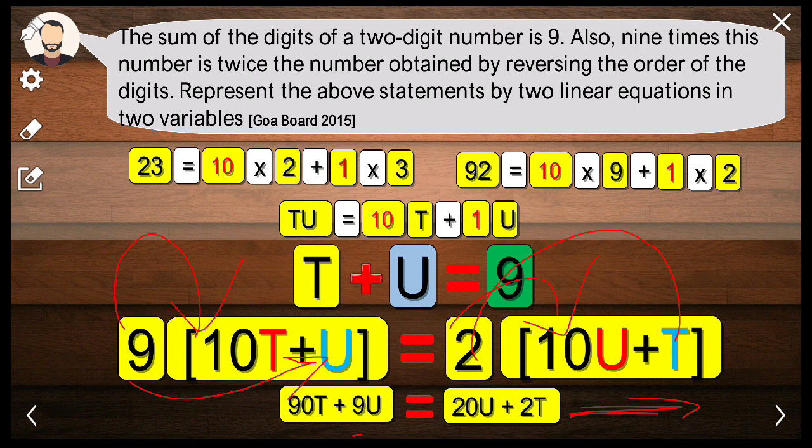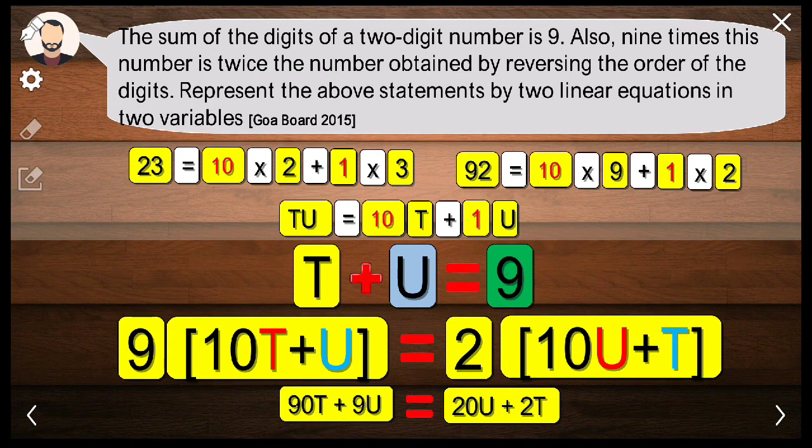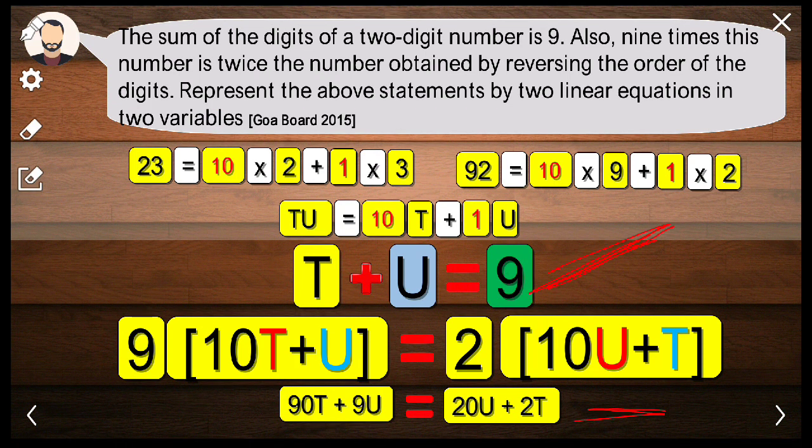Solve it by elimination, substitution, or even cross multiplication to get the answer. But in this question, we are just told to represent. This is my first equation and this is my second equation. Whenever we are told to find out the equation, it's better to write them in their general form. I hope you have understood the entire concept of this word problem.